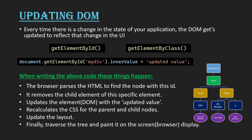This looks like a simple DOM manipulation, but behind the scenes there are lots of steps involved. After writing this code, the browser first parses the HTML to find the node with that id. Then it removes all child elements of that specific element. After removal, it updates the element with the new value, then recalculates the CSS for the parent and child nodes. The newly created child element is then inserted, the layout of the DOM is updated, and finally the tree is traversed and painted on the screen.